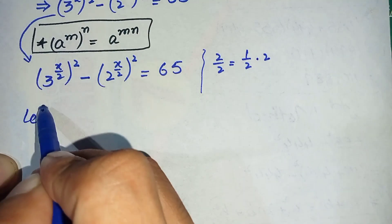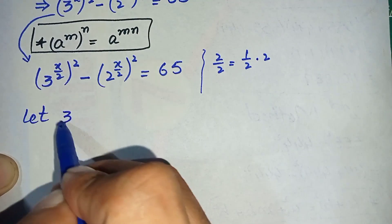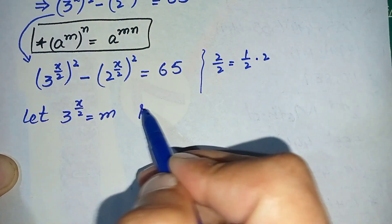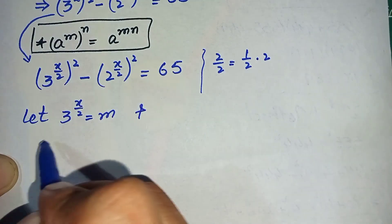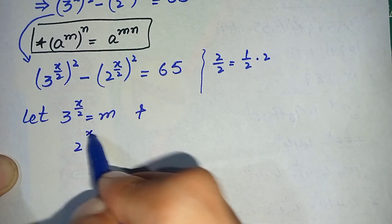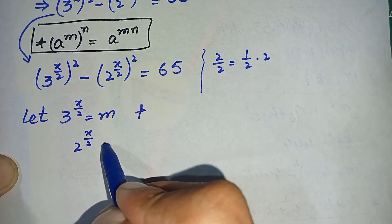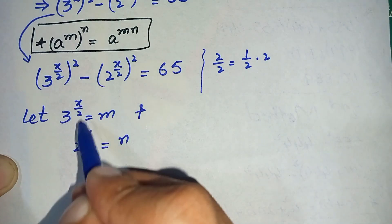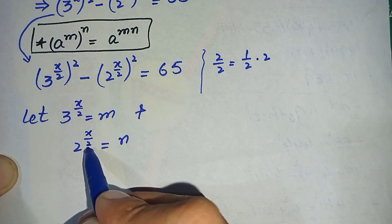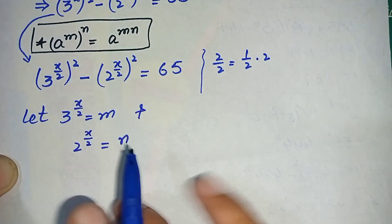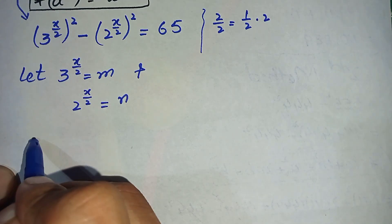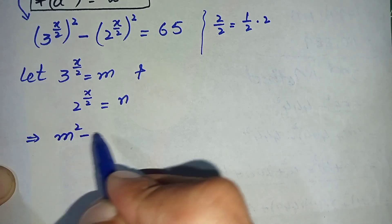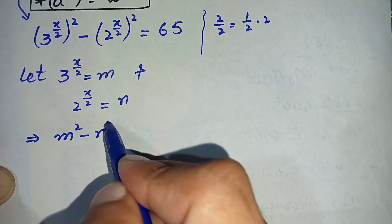Now let us suppose: let 3 raised to power x/2 be equal to m, and 2 raised to power x/2 be equal to n. Substituting these values into the equation, it will become: m squared minus n squared is equal to 65.